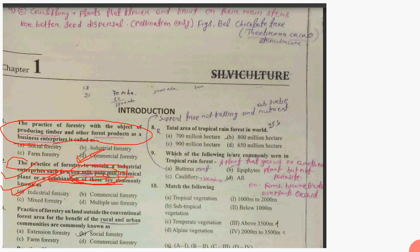The practice of forestry on land outside the conventional forest area for the benefit of rural and urban communities is commonly known as Social Forestry. The purpose of social forestry is to serve rural and urban communities.